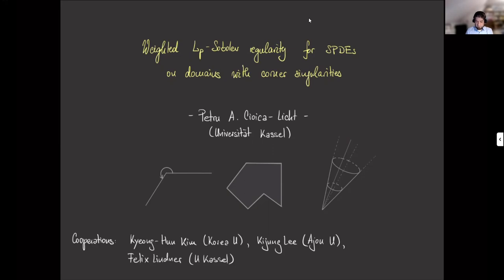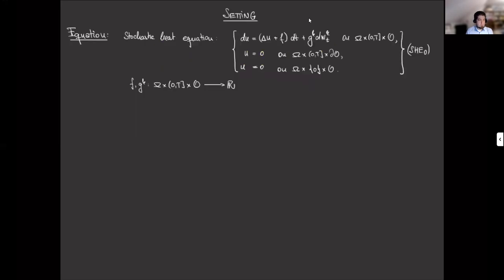This is supposed to be a very short talk, so I'm going to choose a very simple and basic setting. I'm only going to talk about the stochastic heat equation in this form as you see it here. It's a stochastic heat equation on a domain which I denote by O and which I will specify in a moment how it will look like.